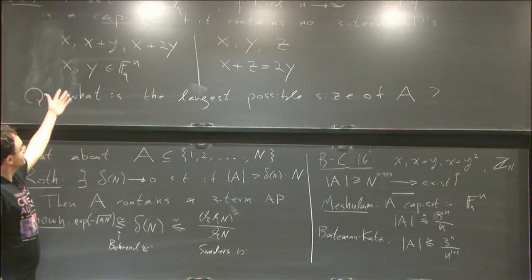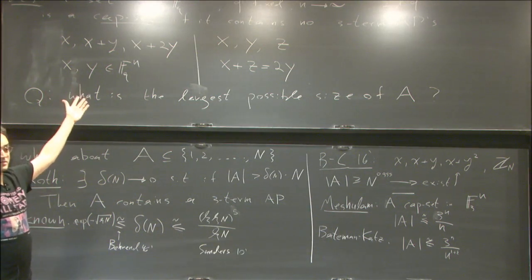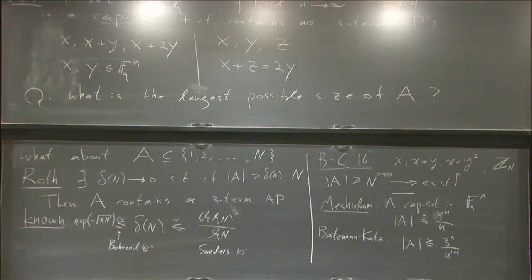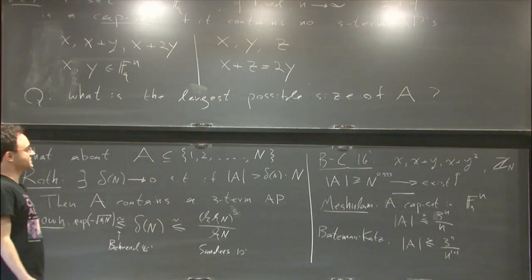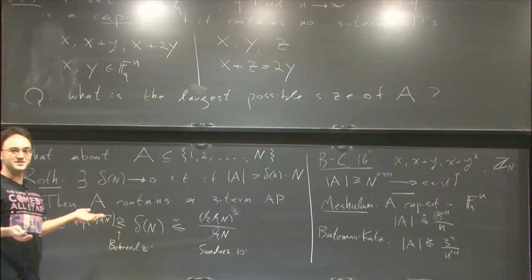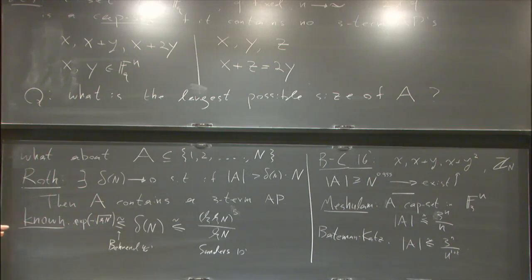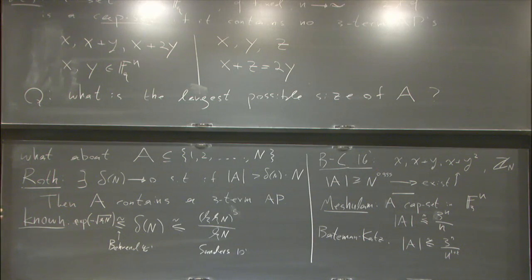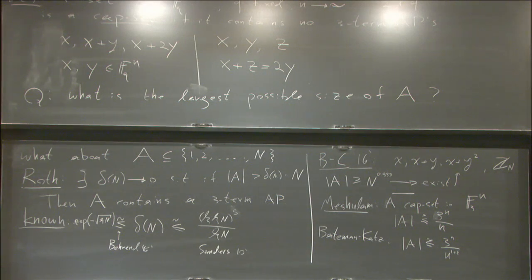You can ask about k-term progressions in F_q^n where k is less than q — that's a legitimate question and still open. The solution I'll show works for three terms; it doesn't give anything for four. It's only a year old, so maybe there's still hope.